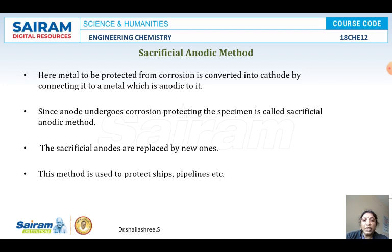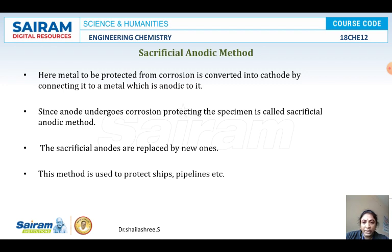Most often, the metals used to protect iron from corrosion are zinc and magnesium. In the sacrificial anode method, zinc strips are connected to the iron base metal. When these two are connected, zinc being the anode undergoes oxidation with liberation of electrons and gets corroded, protecting the base metal iron.